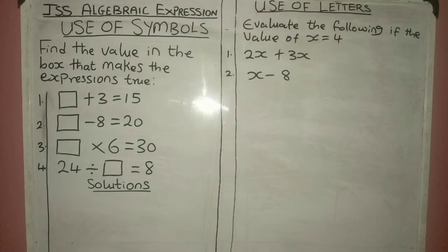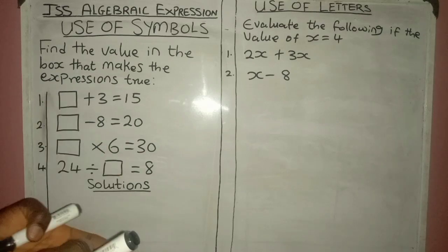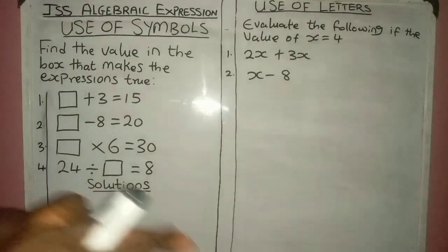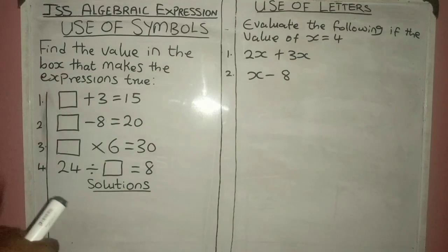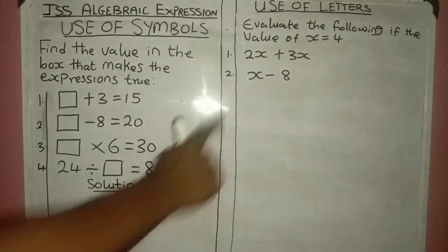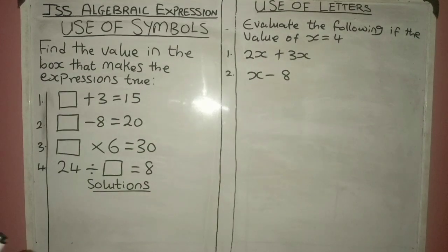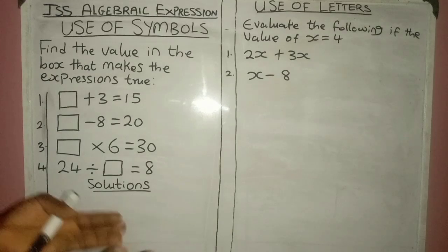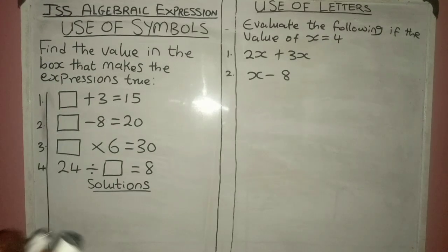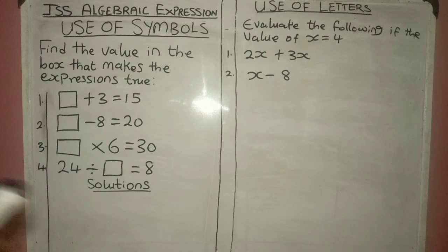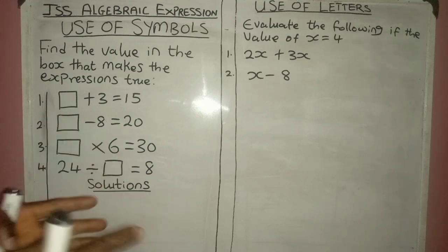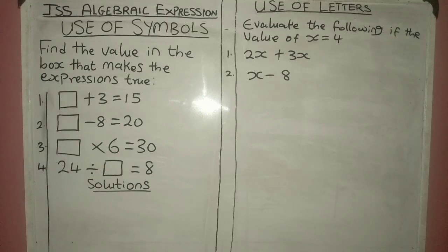Use of symbols. Algebra is made up of numbers and letters put together. Sometimes we use symbols to represent these numbers, and sometimes we use letters to represent these numbers — we call them variables, because they are representations of numbers. You can see I use boxes; some other person can use the symbol of a car, the symbol of a shirt, and the rest of them to represent a number. Now taking a look at the examples we have here, the question says: find the value in the box that makes the expressions true.